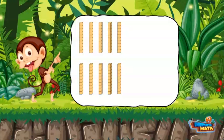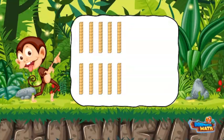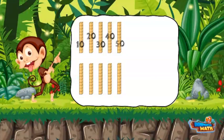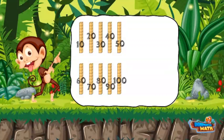I mentioned it takes 10 rods to make 100. Well I am going to prove it to you. When rods are shown we count by 10. I start counting: 10, 20, 30, 40, 50, 60, 70, 80, 90, 100. Voila, 10 rods make 100.